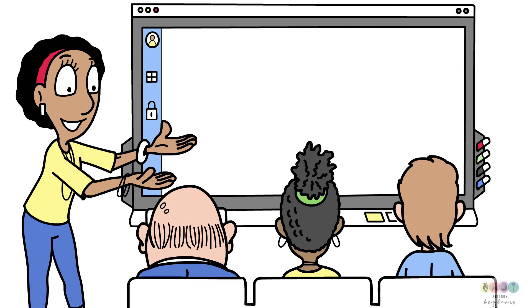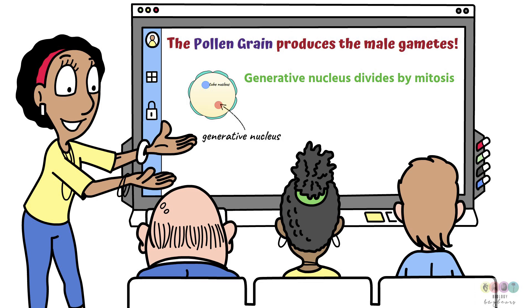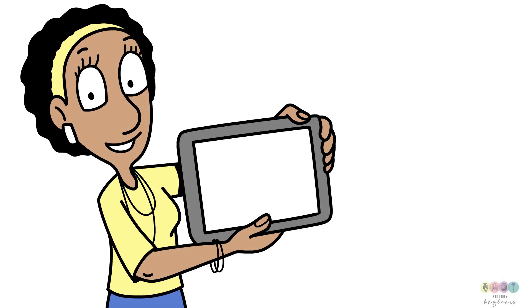The first important statement is that the pollen grain produces the male gametes, but you must go on and discuss how the generative nucleus divides by mitosis, usually in a pollen tube, to form the two male gamete nuclei.